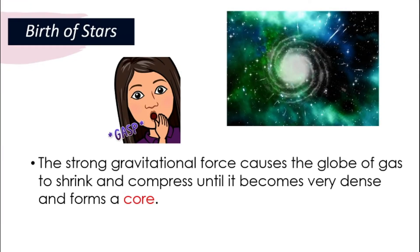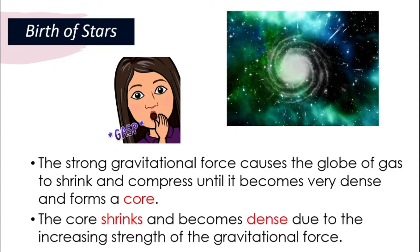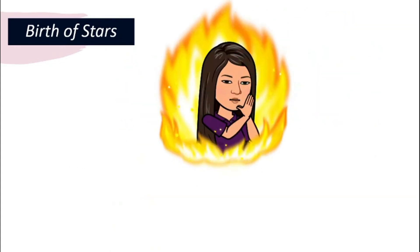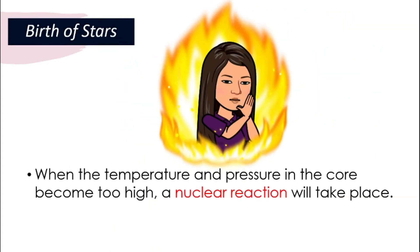The strong gravitational force will continue to pull at this globe of gas, and it will start shrinking and compress, becoming very dense and forming a core. The core will keep shrinking and become even more dense as the gravitational force continues to grow stronger. Then the temperature and pressure in the core will start to increase — becoming very high — until a nuclear reaction takes place.